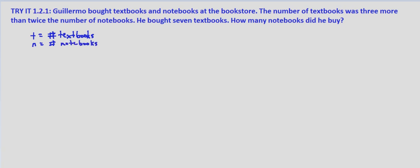So we are given that the number of textbooks was three more than twice the number of notebooks. So the number of textbooks, t, is three more than twice the number of notebooks. So two times the number of notebooks and then three more.